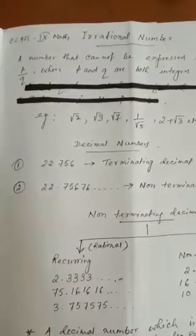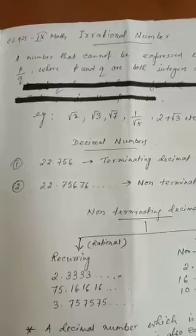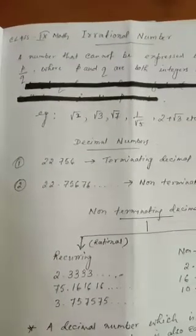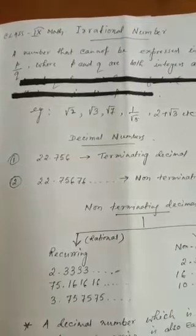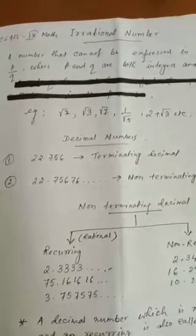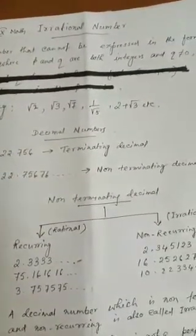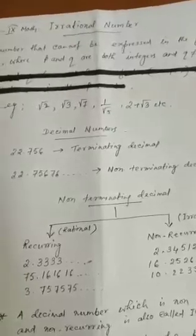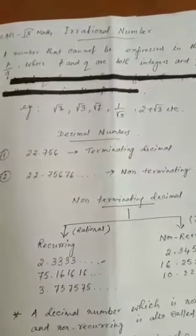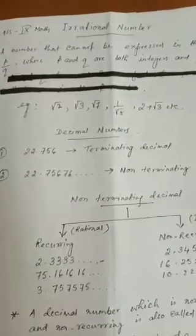Last class we discussed rational numbers. Rational numbers are those numbers that can be expressed in the form p/q, where p and q are both integers and q is not equal to 0. At the same time, p and q should not have any common factor other than 1.